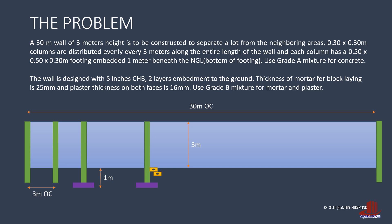For the masonry details, we are to use 5 inches CHB and there are two layers of embedment. The wall is plastered on both faces.